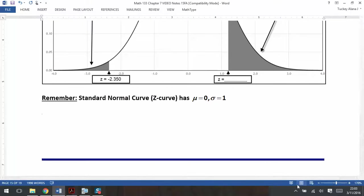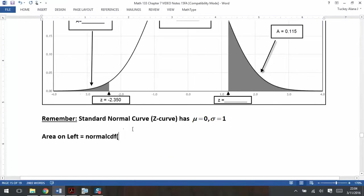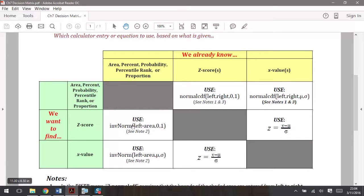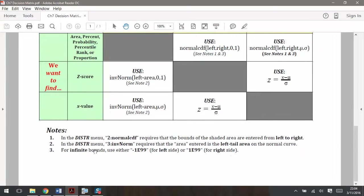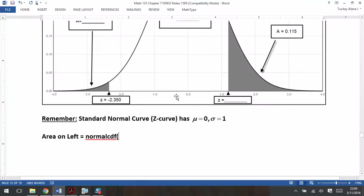So normal CDF, left, comma, right, comma, zero, comma, one. I know that I need the left-hand edge of what we shaded. But remember that when it decreases without bound, when it goes forever infinitely in the left direction, we use negative 1E99. So we're going to use negative 1E99. And then we want the right-hand edge, which was given, which is negative 2.350, zero and one because it's a z-curve and those things never change for z-curves.